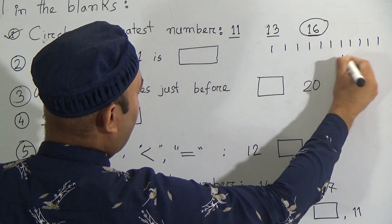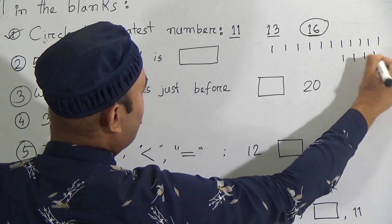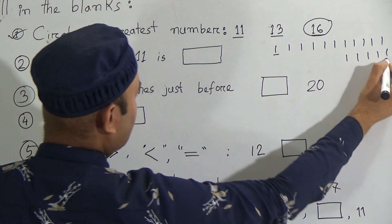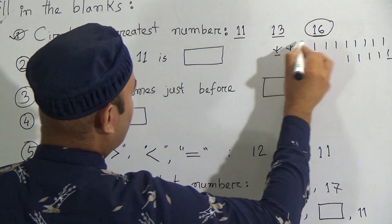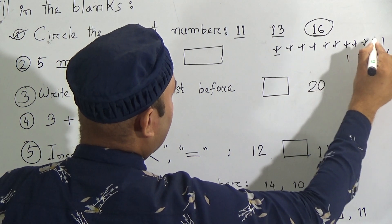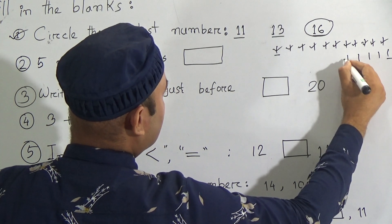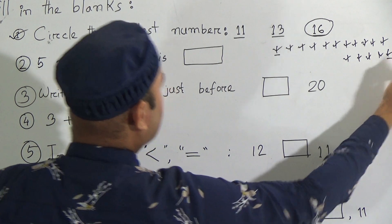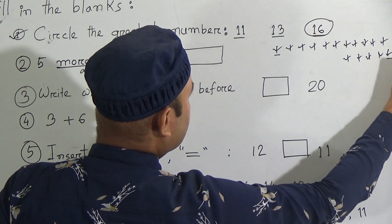And more than five, that means one, two, three, four, five. Now count from starting point to ending point: one, two, three, four, five, six, seven, eight, nine, ten, eleven, twelve, thirteen, fourteen, fifteen, sixteen.